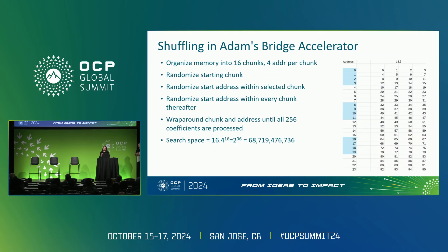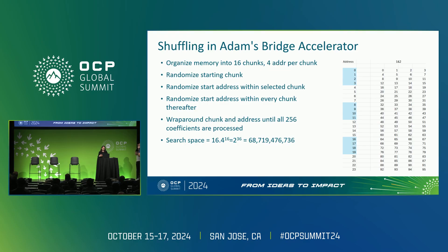To implement shuffling, we reorganize the memory. Instead of 64 addresses, we consider it as 16 chunks of four addresses each. We add a first level of randomization by randomizing the starting chunk for each NTT stage — for example, stage one can start at chunk 5 instead of chunk 0. A second level of randomization randomizes the column order within each chunk: instead of processing columns 0,1,2,3, we could do 2,3,0,1 or 3,0,1,2 and so on. The resulting search space is 16 (for chunk order) times 4^16 (for column order within chunks), which comes out to 68 billion — the larger this number, the stronger the countermeasure.